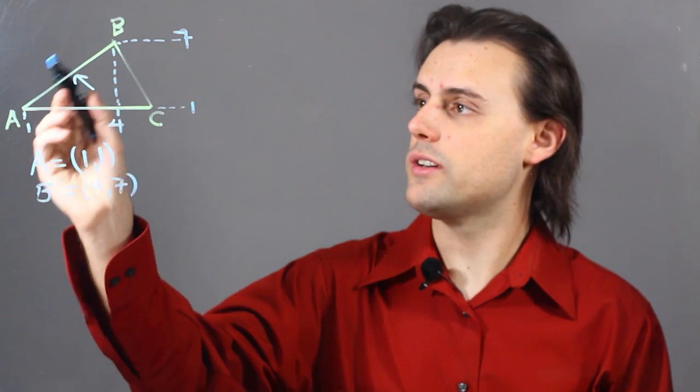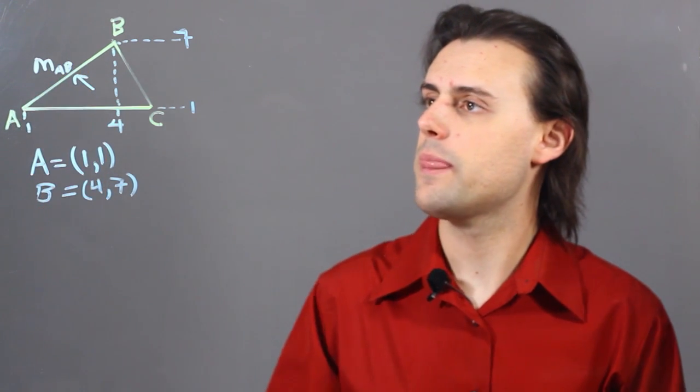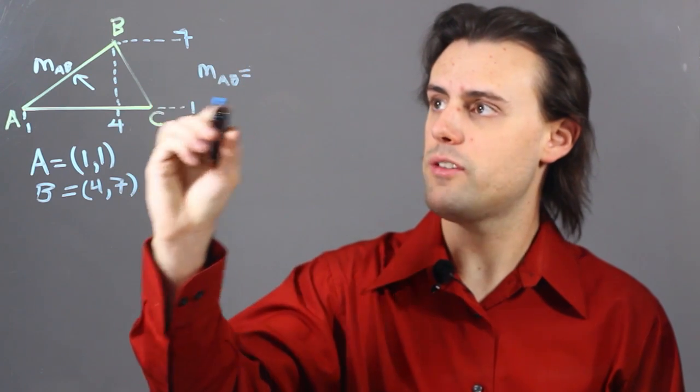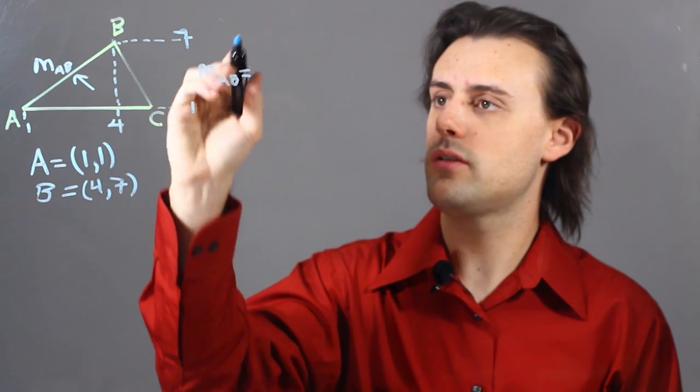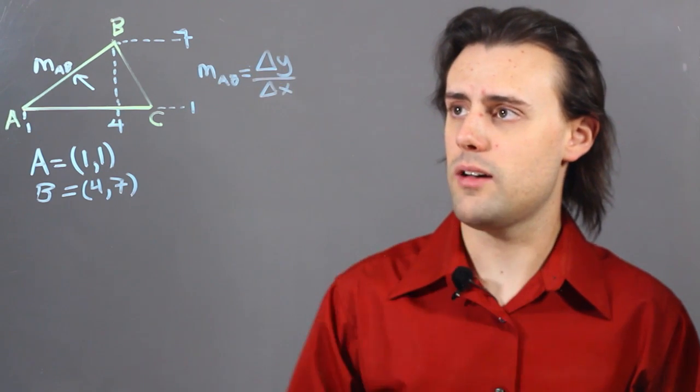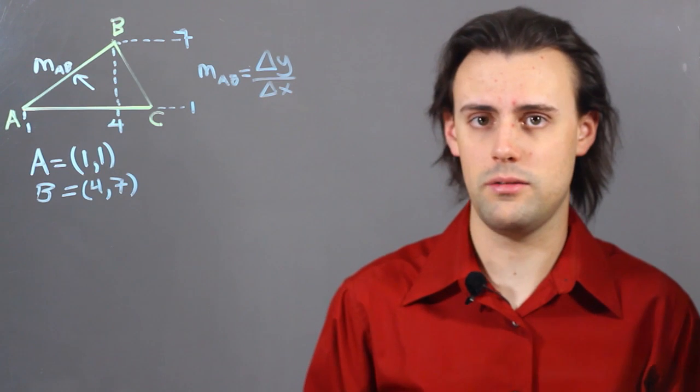So, if I wanted to calculate this slope, call it m_AB, then I simply calculate the difference in the y values divided by the difference in the x values. So, I have m_AB is equal to delta y divided by delta x,